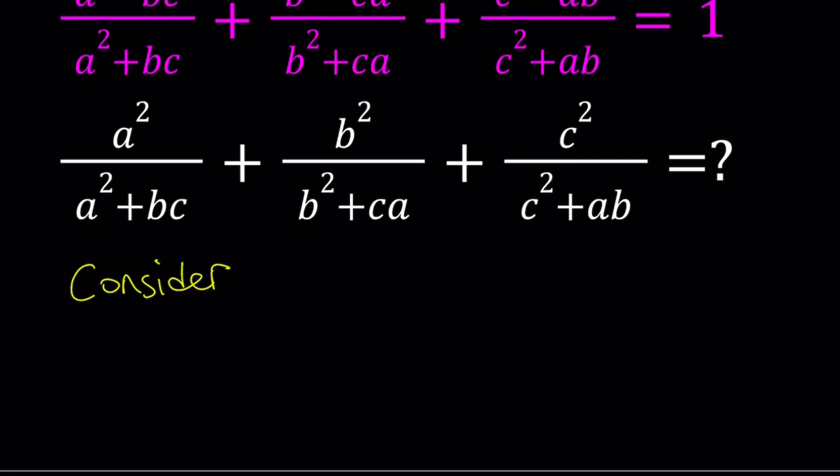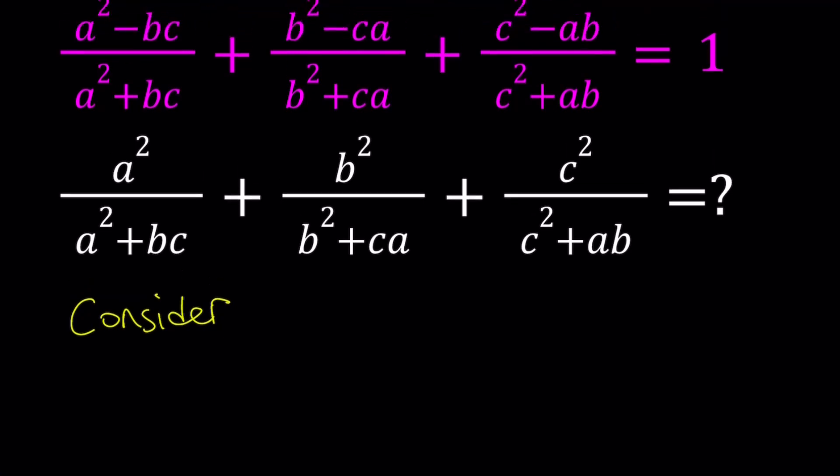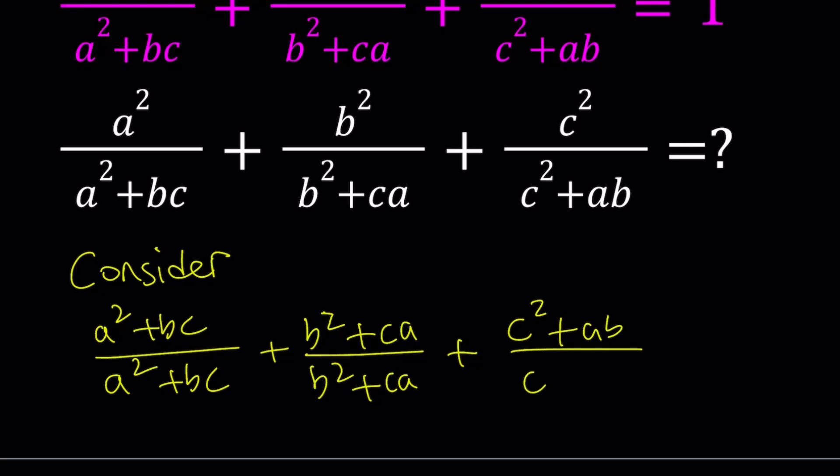So let's go ahead and consider the top expression. Notice that they have the same denominators. We're going to form fractions by using the denominators as numerators and denominators. What am I talking about? That's confusing. a squared plus bc divided by a squared plus bc, plus b squared plus ca over b squared plus ca, plus c squared plus ab over c squared plus ab. I'm basically writing the same thing over and over.